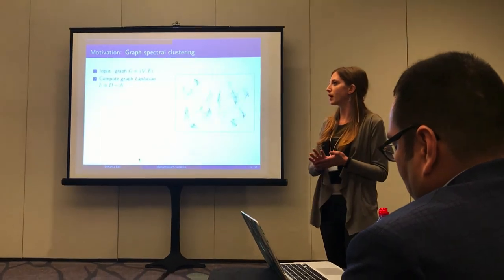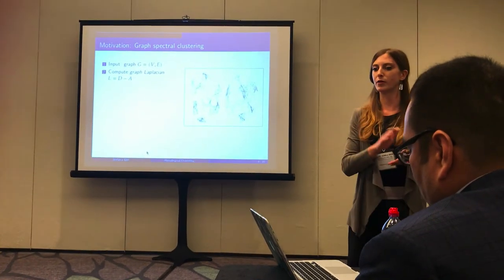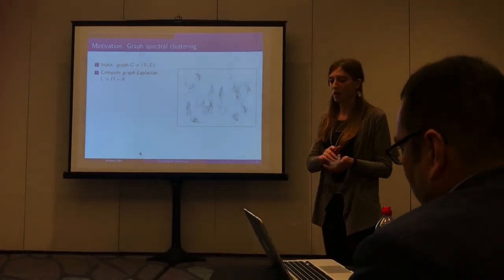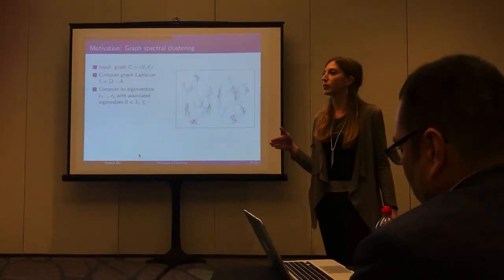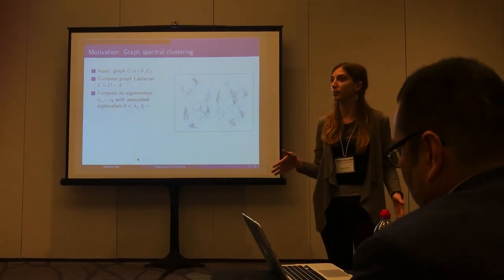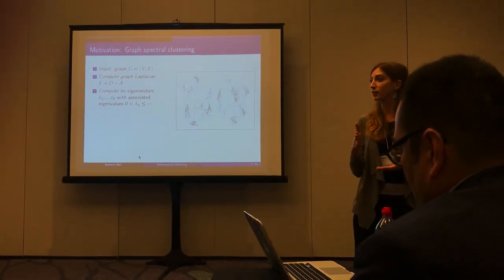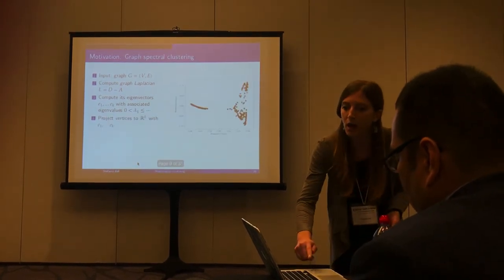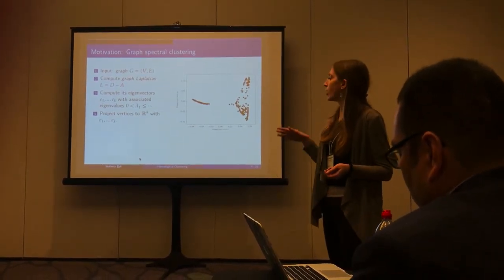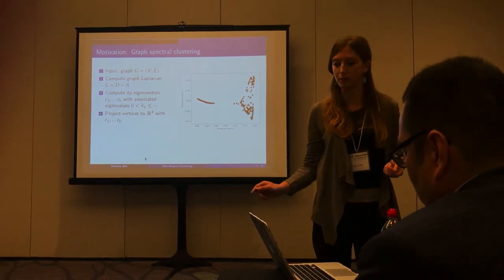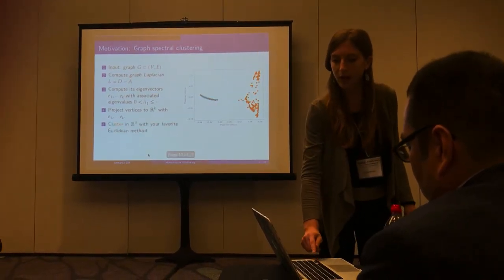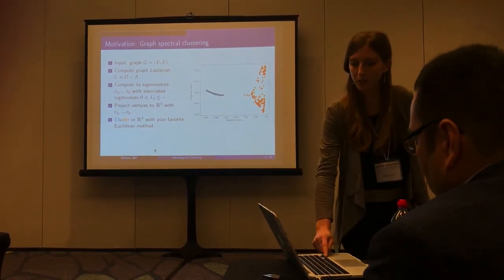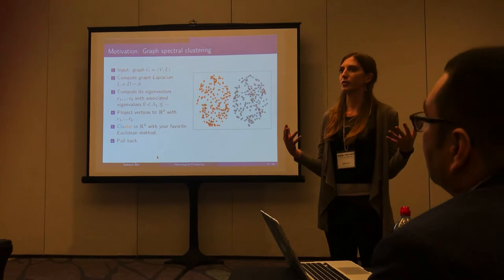The matrix associated to the graph is called the graph Laplacian, given by the difference between the degree matrix and the adjacency matrix. One computes the eigenvectors associated to the non-zero eigenvalues — specifically, one chooses k eigenvectors associated to the k smallest non-zero eigenvalues — and projects the vertices of the graph to R^k using these eigenvectors. Then in R^k one clusters points using any method.